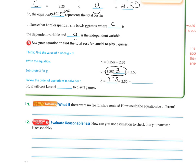Then I'm going to do my addition, because I'm following order of operations. 9.75 plus 2.50 is 12.25. So it will cost Lorelai $12.25 to play three games.